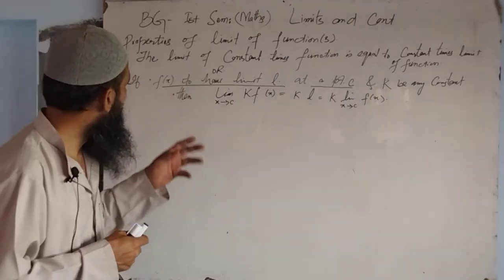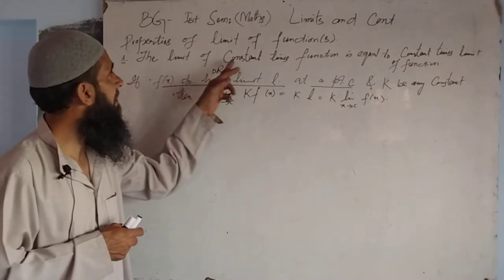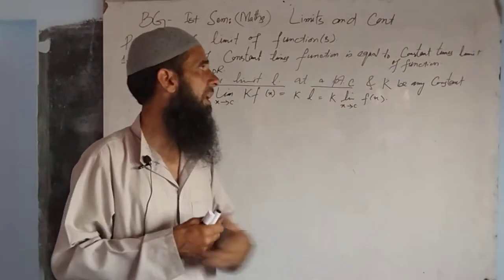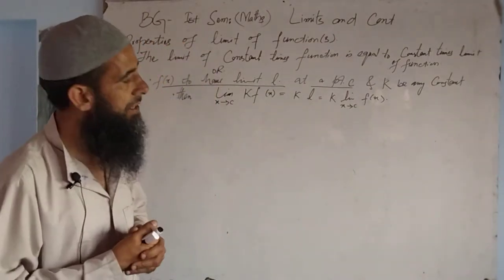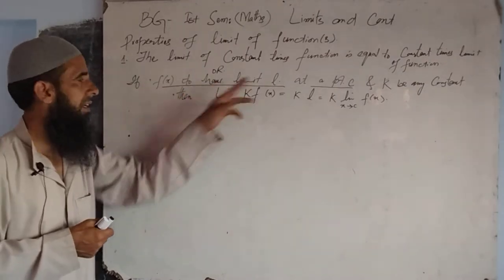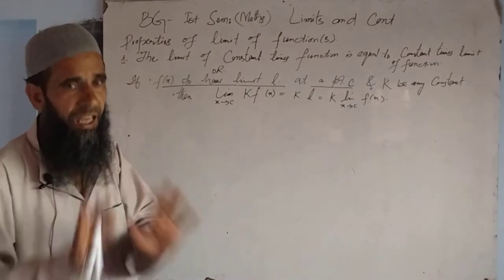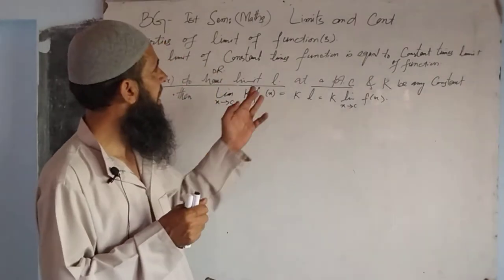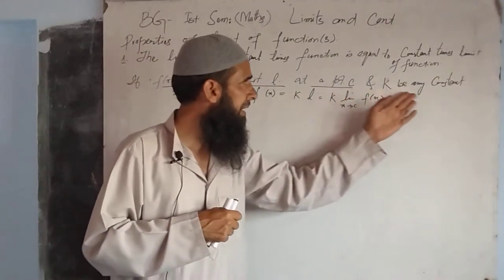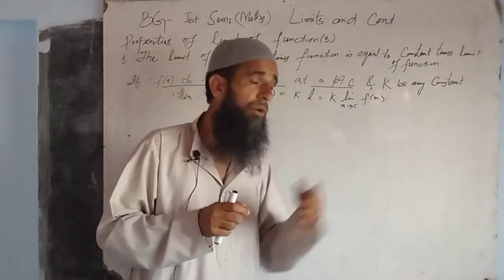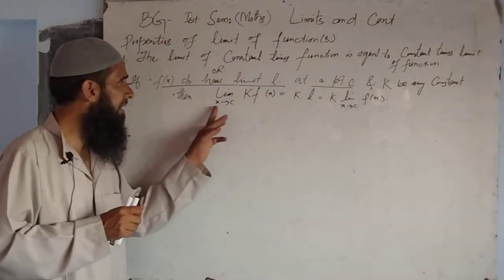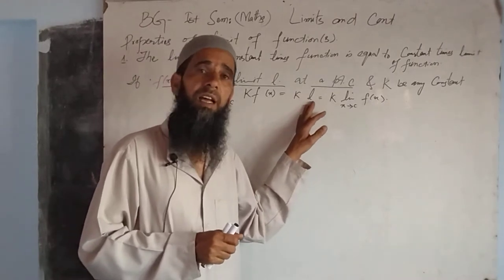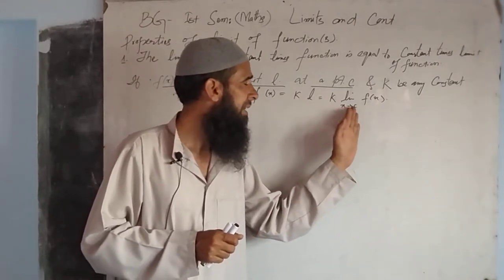The property statement: the limit of a constant times a function is equal to the constant times the limit of the function. Given that f(x) has a limit l at a point c — that is, the limit exists and equals l — and k is any constant.